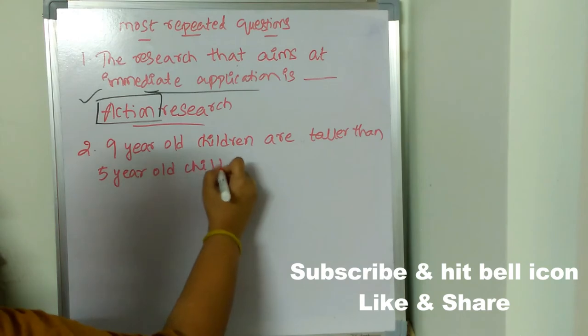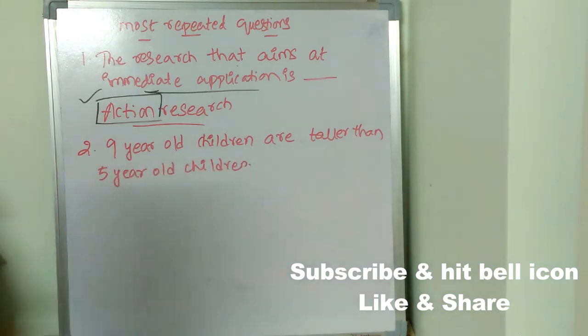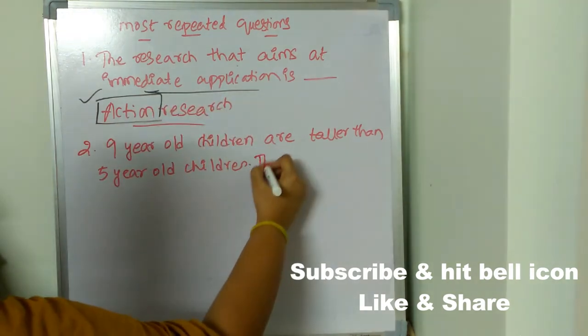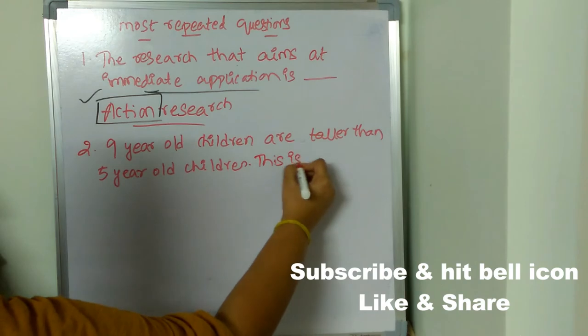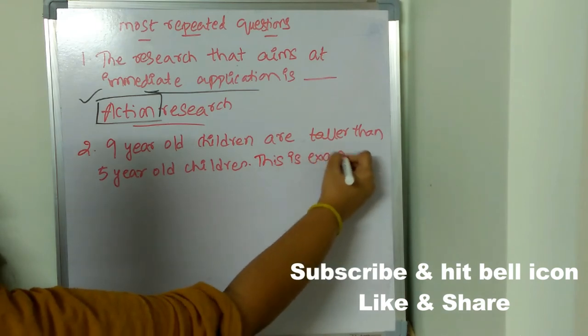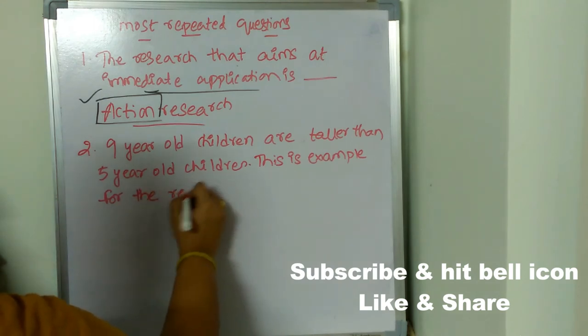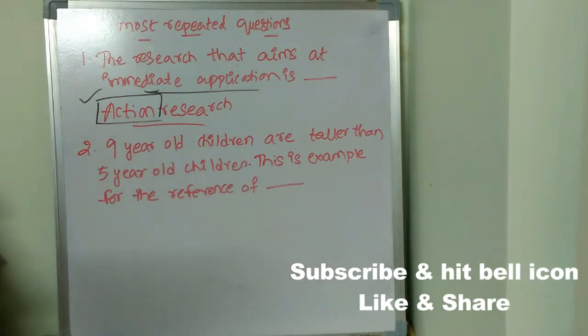Okay, nine year old children are taller than five year old children. This is example for what? Okay, this is a reference taken as example for what? This is example for the reference of dash. Okay, so the answer is cross-sectional study.